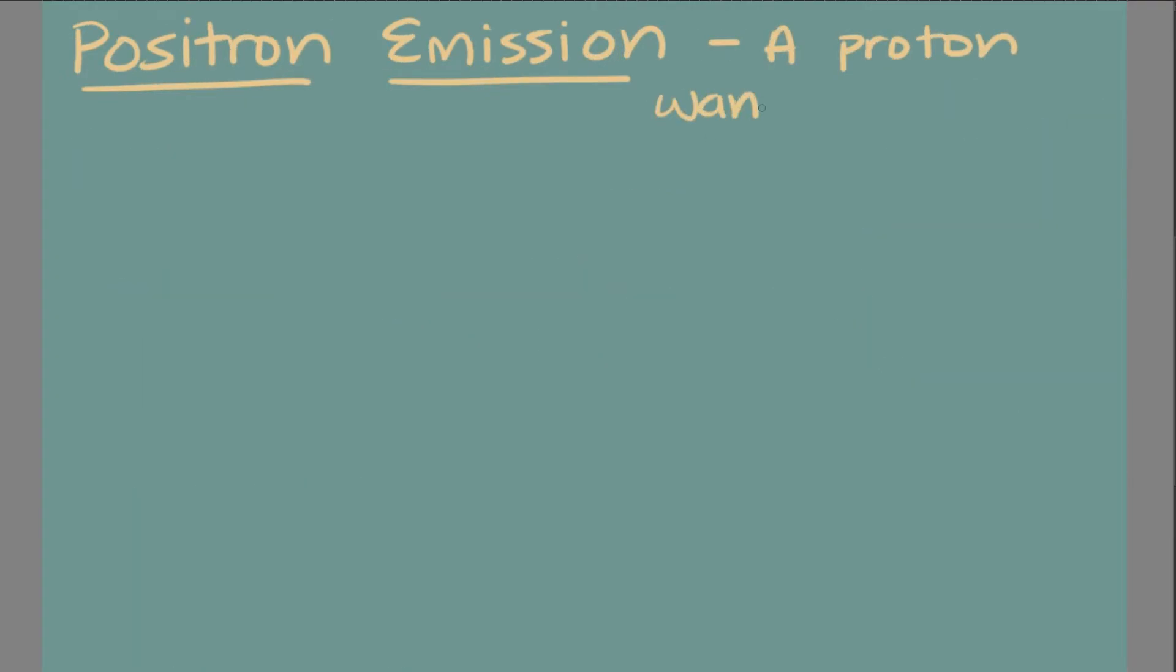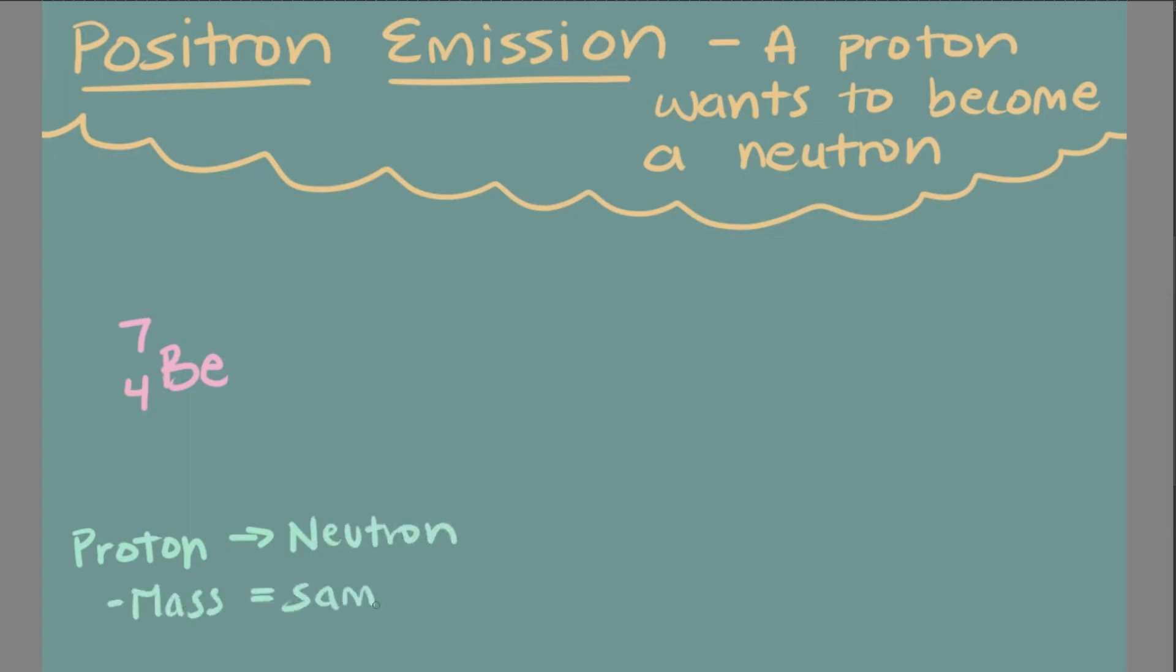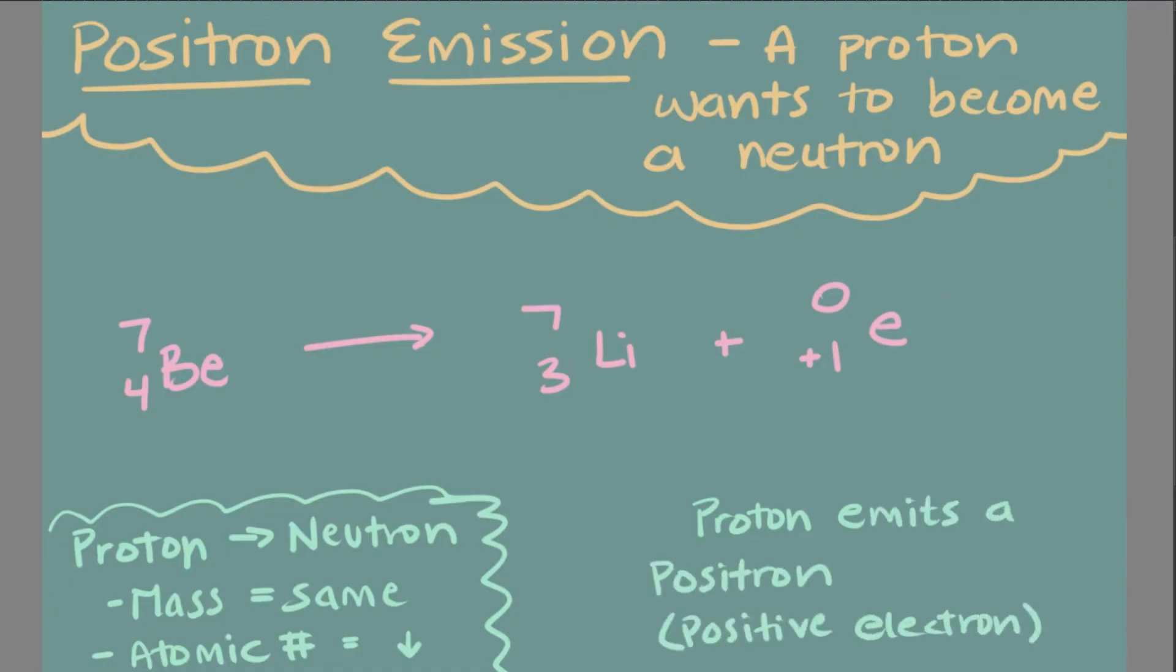Positron emission, or beta plus decay, happens when a proton wants to become a neutron. This happens because a proton emits a positron, which is equivalent to an electron that has a positive charge. Once emitted, the proton is a neutron with a neutral charge. For example, let's consider beryllium. In an isotope of beryllium known as beryllium-7, positron emission can happen. The proton becomes a neutron, making the atomic number of the atom change, but the mass remain the same, just like in beta decay.